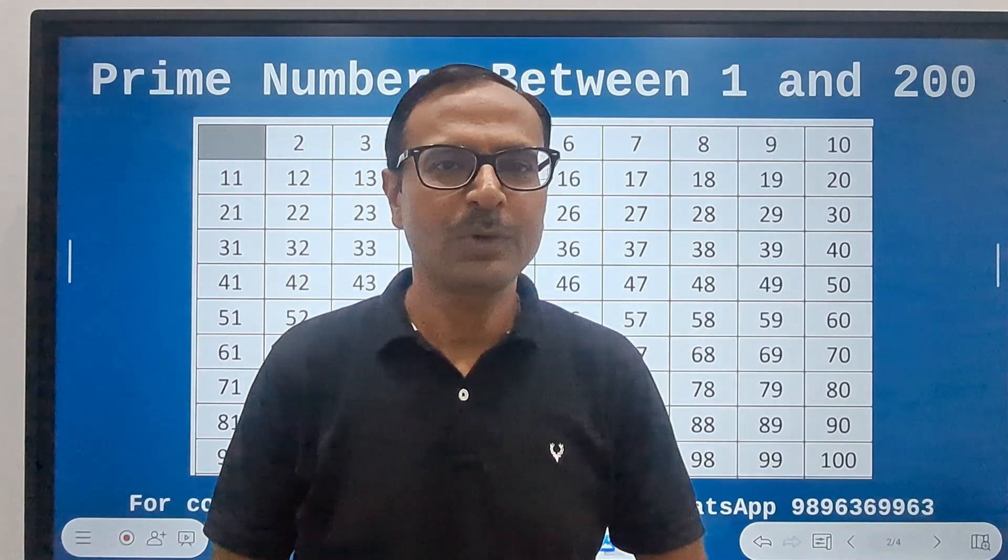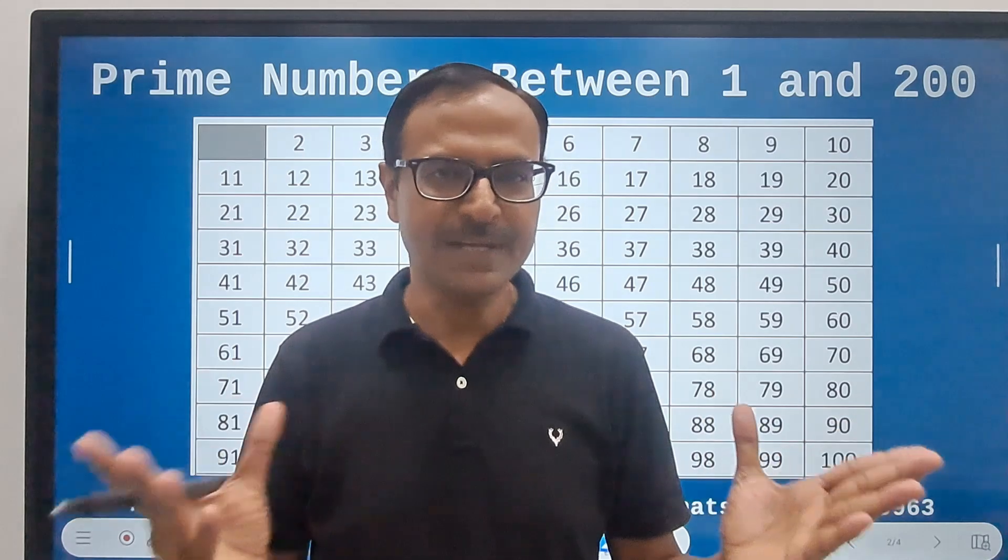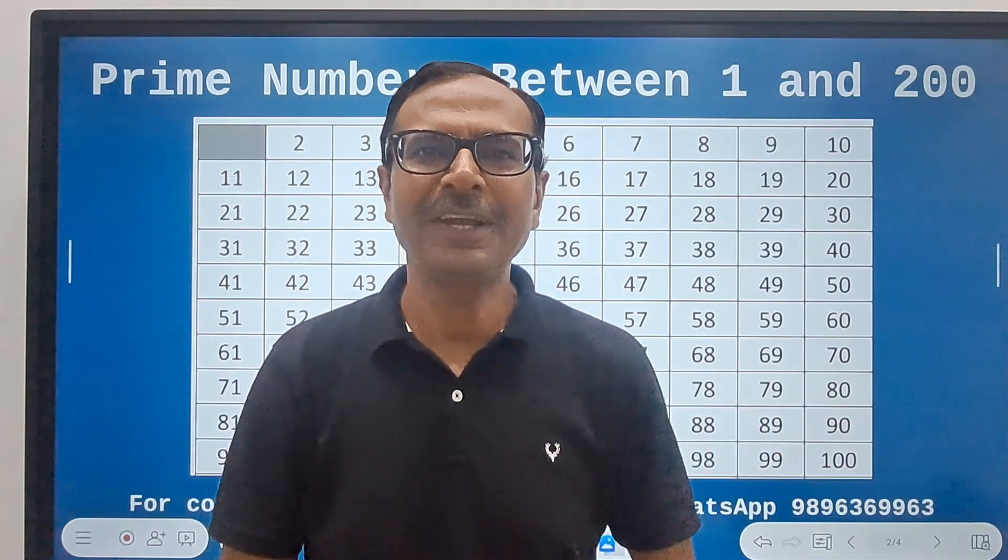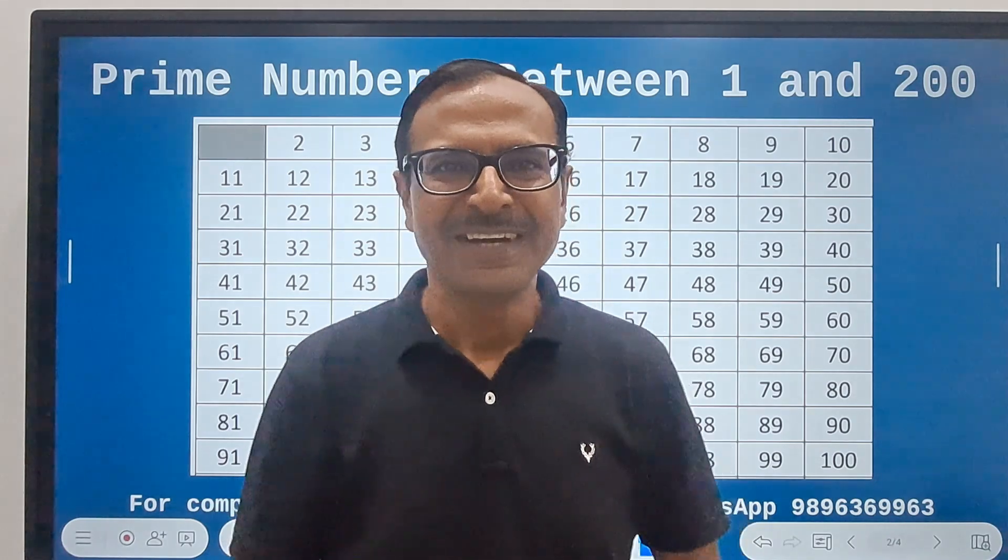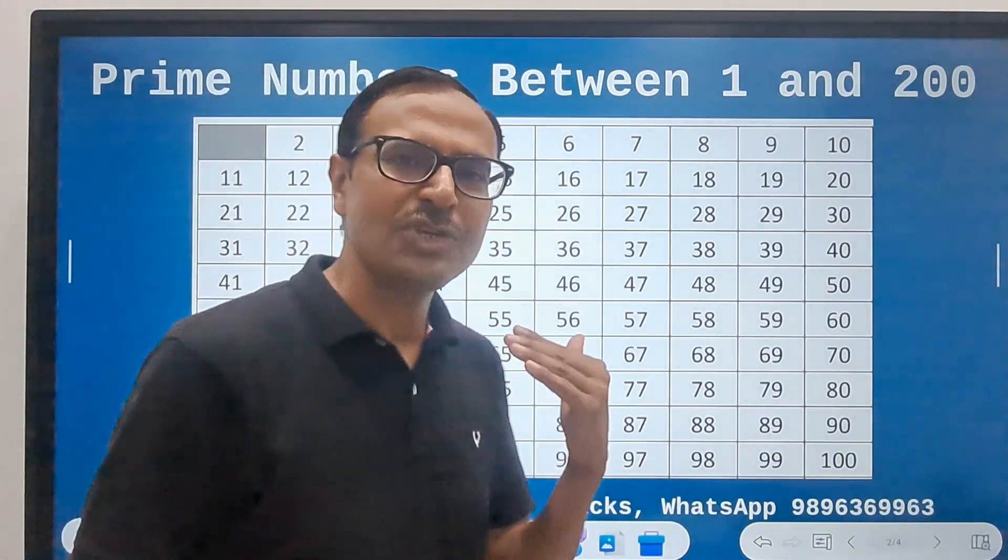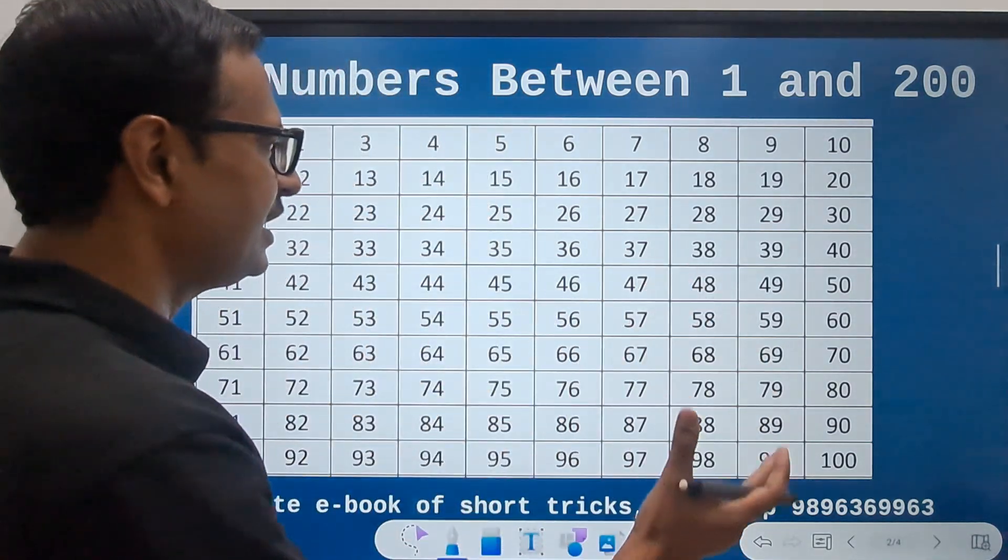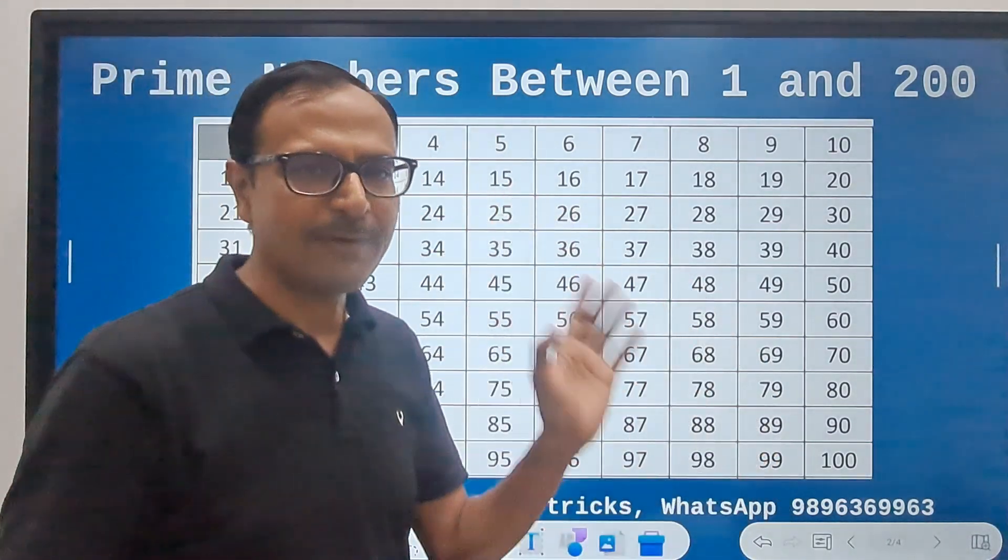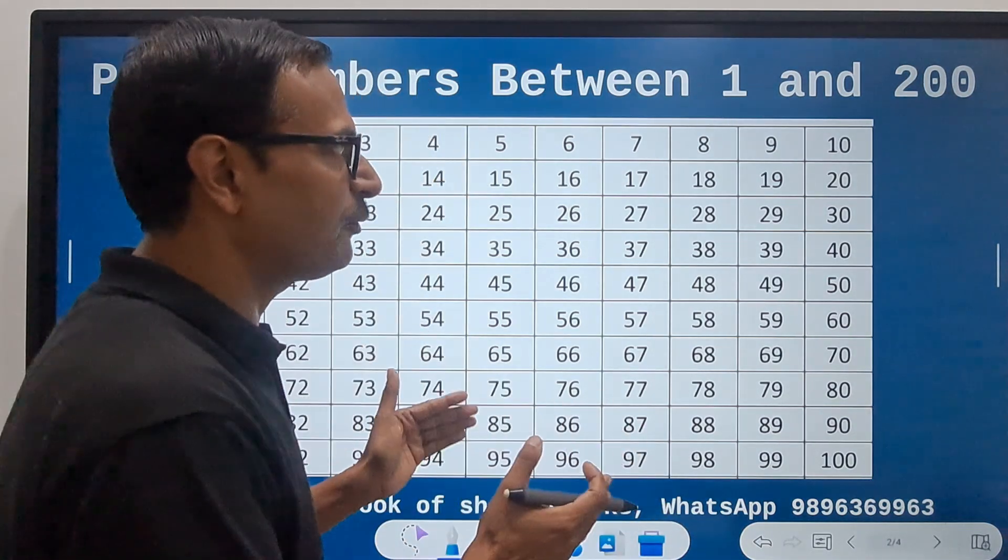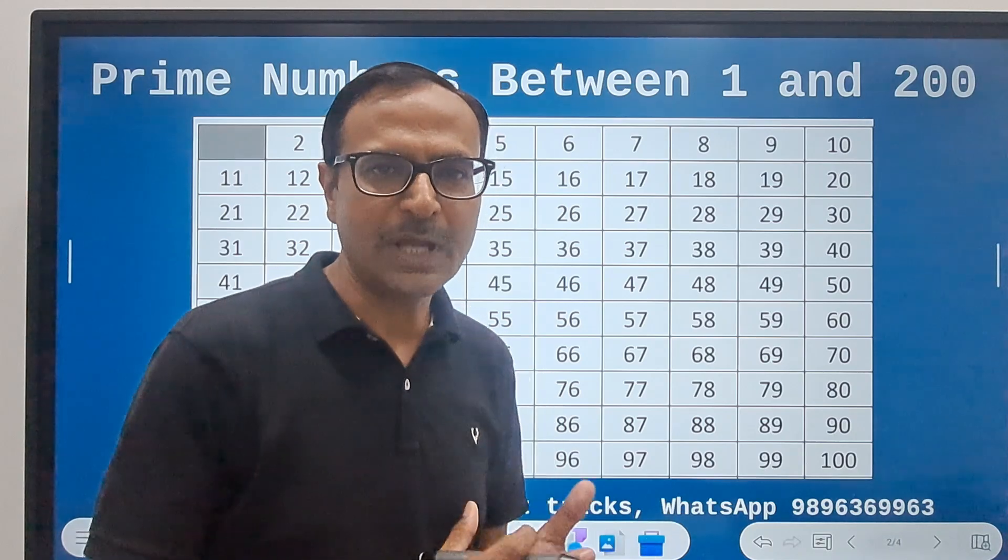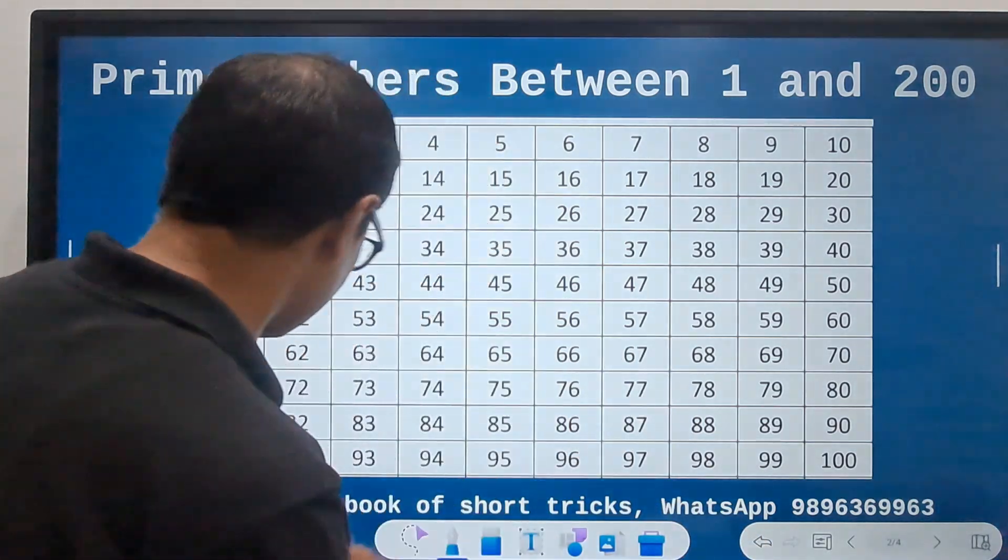You must have heard about the famous concept of the sieve of Eratosthenes. That's an amazing concept in which they have given a process through which you can find the prime numbers between 1 and 100. So very quickly I will demonstrate that, because my main focus of this video is to tell you the prime numbers between 101 and 200.